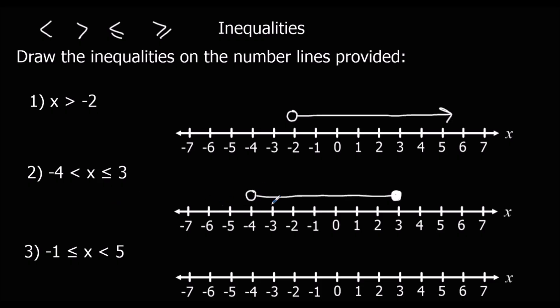So what numbers could it be? If it was an integer, a whole number, it can't be minus 4 because it's not 'or equal' — it's bigger than. So it can be minus 3, minus 2, minus 1, 0, 1, 2, or 3, because it can be 3.